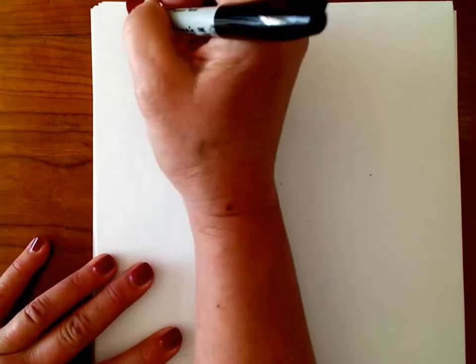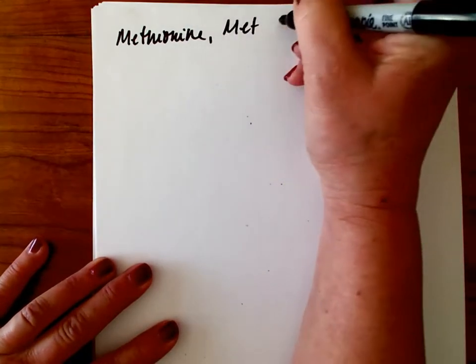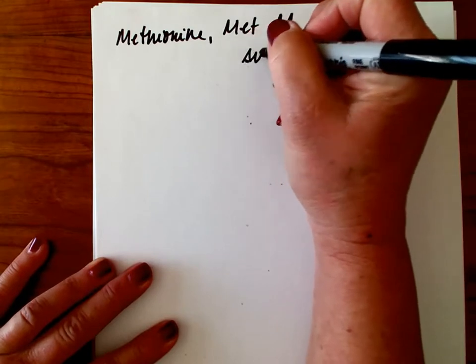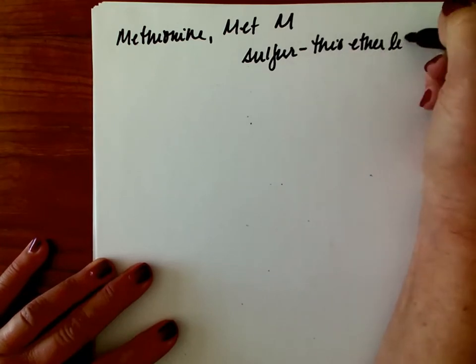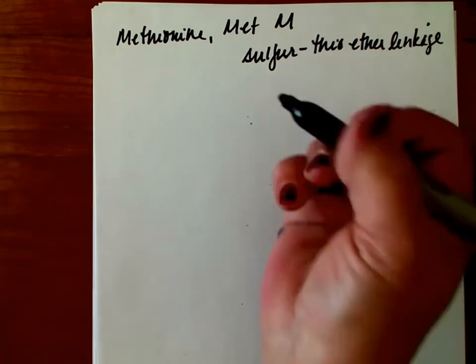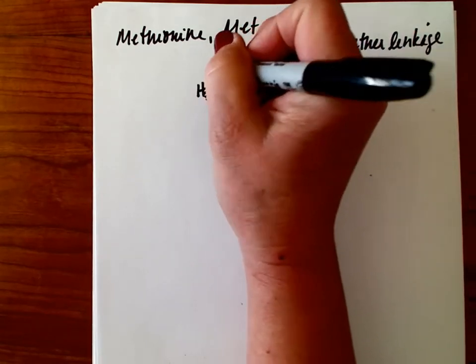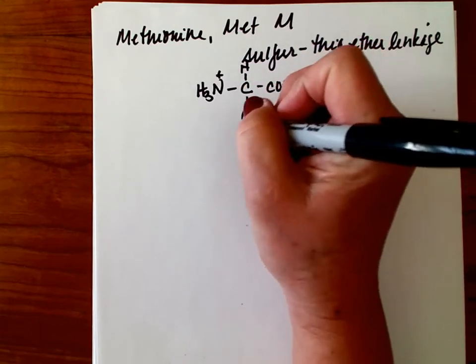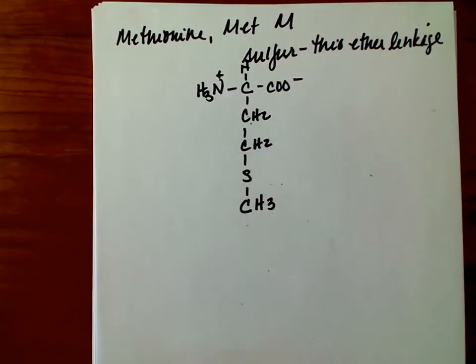On to methionine — MET, M. Methionine has a sulfur thioether linkage. It too is nonpolar and is a very important amino acid — we'll talk about that a bit more later. So we have two methylenes, a sulfur, and then the final methyl group in that side chain.